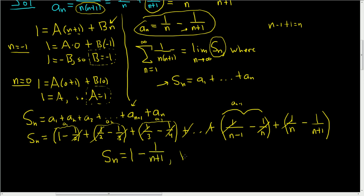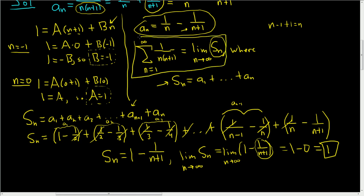So if we take the limit of s sub n as n approaches infinity, that's equal to the limit of 1 minus 1 over n plus 1 as n approaches infinity. And this term here approaches 0. So this is just 1 minus 0, which is equal to 1. And so the answer is equal to 1, because the infinite sum is equal to the limit as n approaches infinity of s sub n.